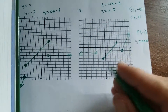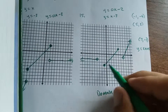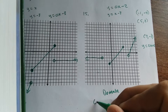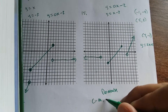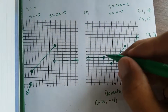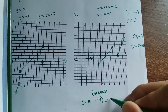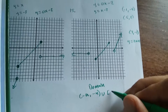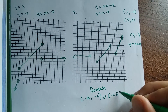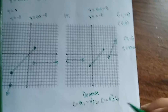There are gaps in your domain. The domain goes from negative infinity to negative 4 — not including negative 4, so use a parenthesis — union with negative 1 to 5 in square brackets, union with 7 to infinity in a parenthesis.